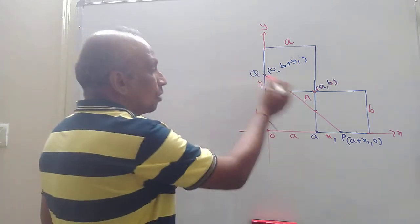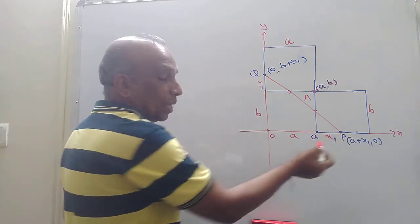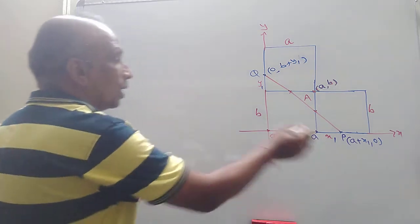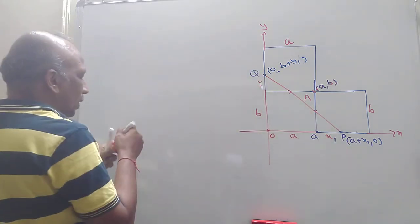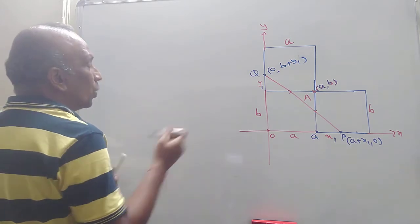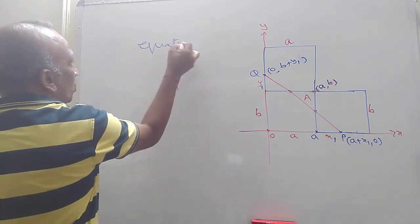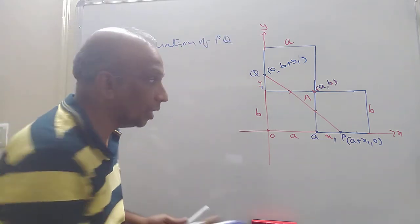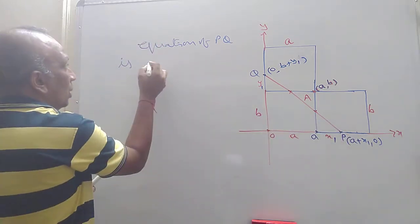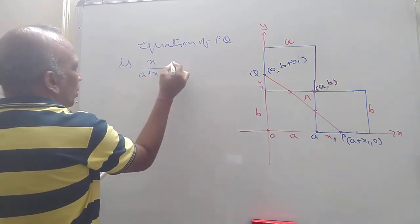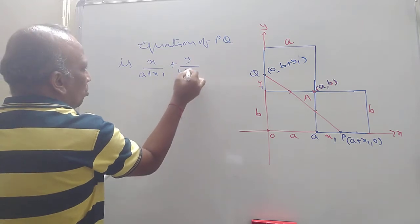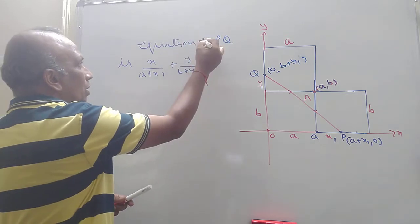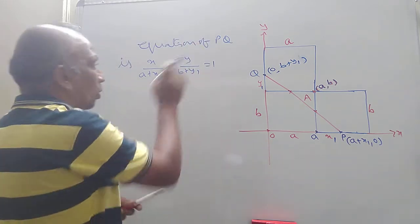Then, what about the equation? This is the Y intercept and this is the X intercept. OP is X intercept and OQ is Y intercept. If you know the intercepts, I get an equation of PQ directly. So the equation of PQ is: X divided by (A plus X1) plus Y divided by (B plus Y1) is equal to 1. This is the equation of PQ.